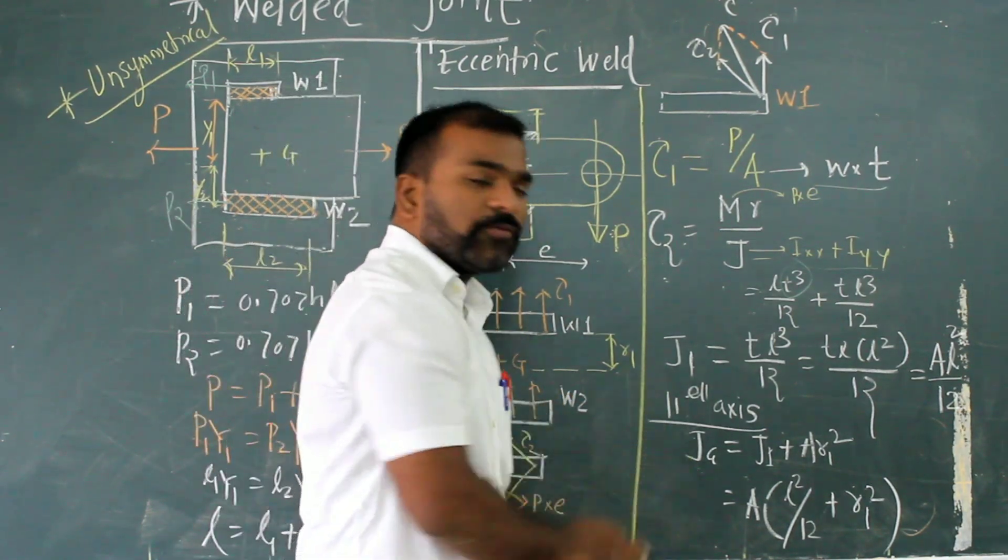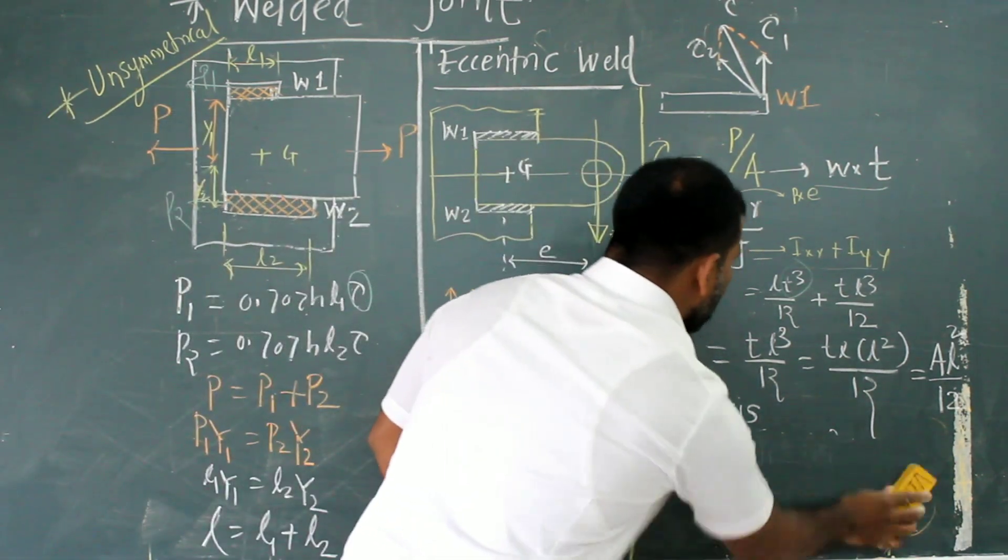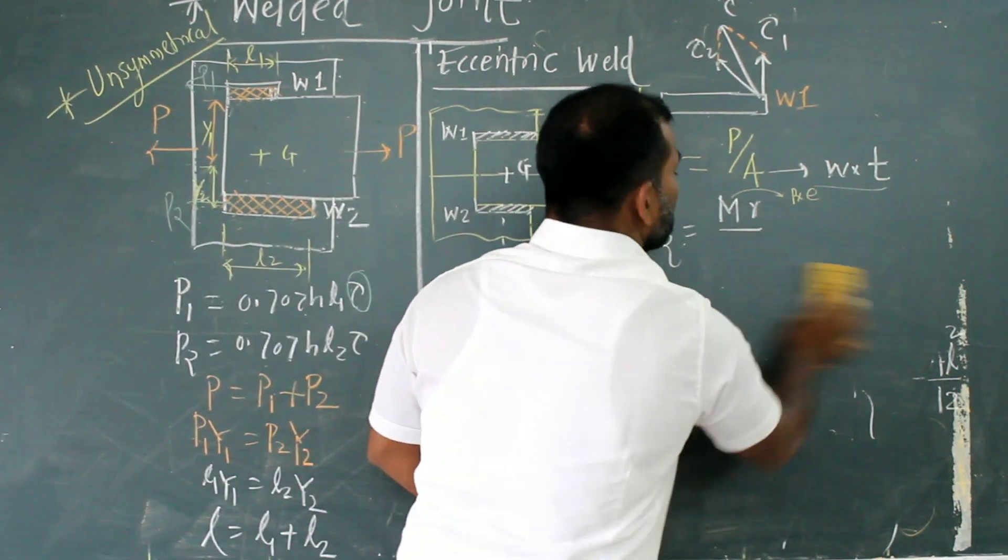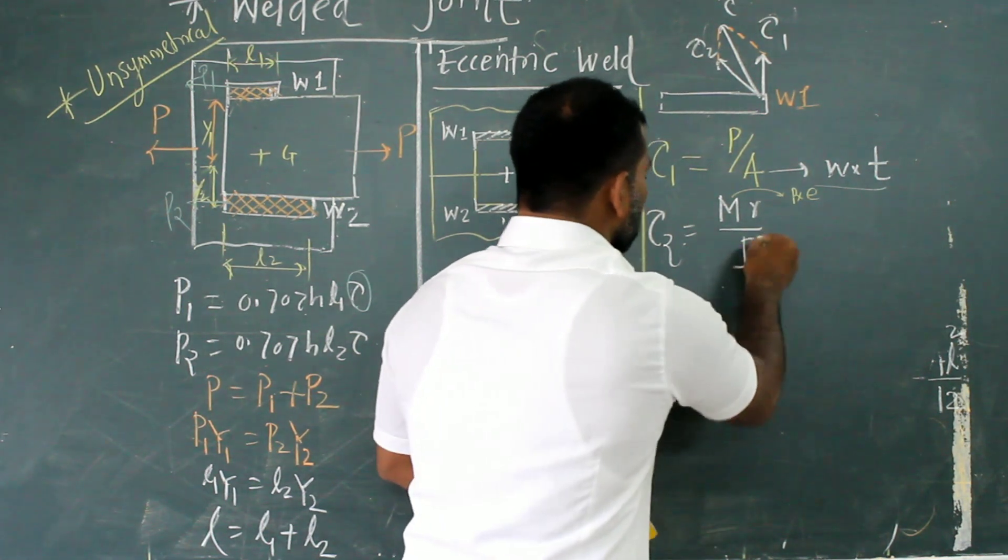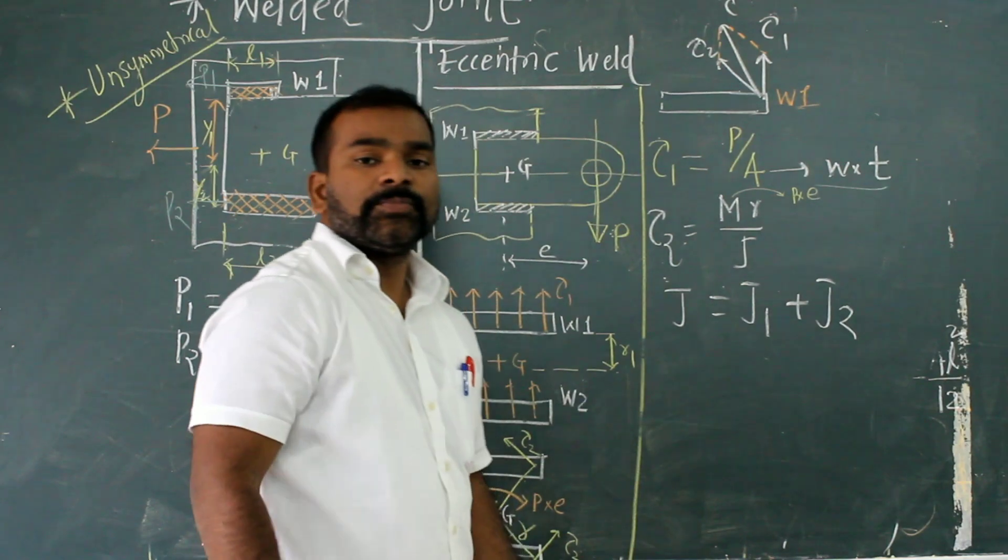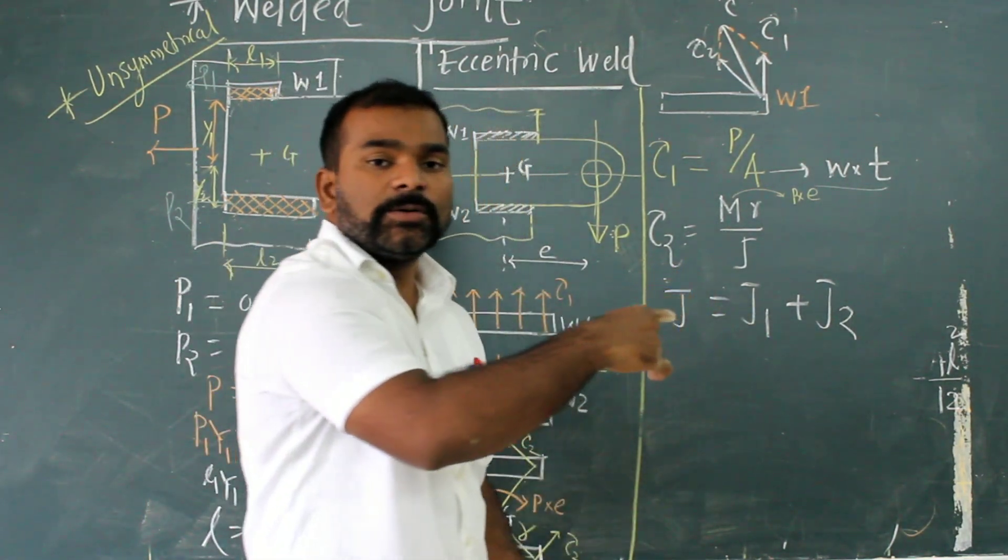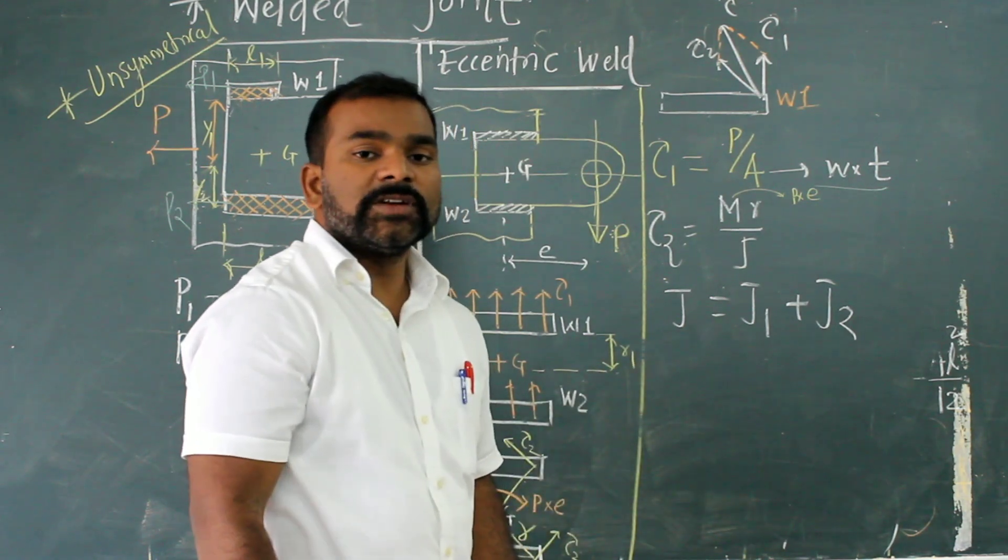This will be the total polar moment of inertia of this structure. Now, this is only for first weld. If I want to write for second weld, I can say that the direct equation will be for that case: total J is equal to polar moment of first weld plus second weld. That is addition of welds. Whatever the equation comes, if I add, then I will get the total polar moment of inertia.